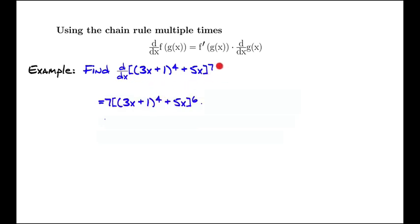So we take the derivative of something to the 7th. That's 7 times whatever's inside raised to the 6th, and then we just write d dx of whatever's inside. That was applying this formula.